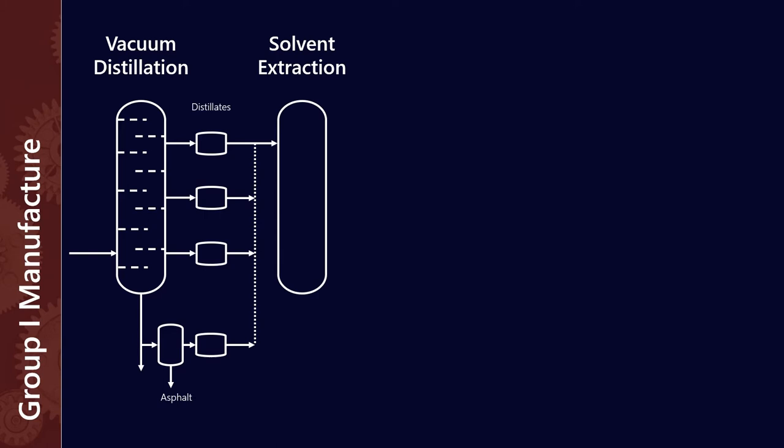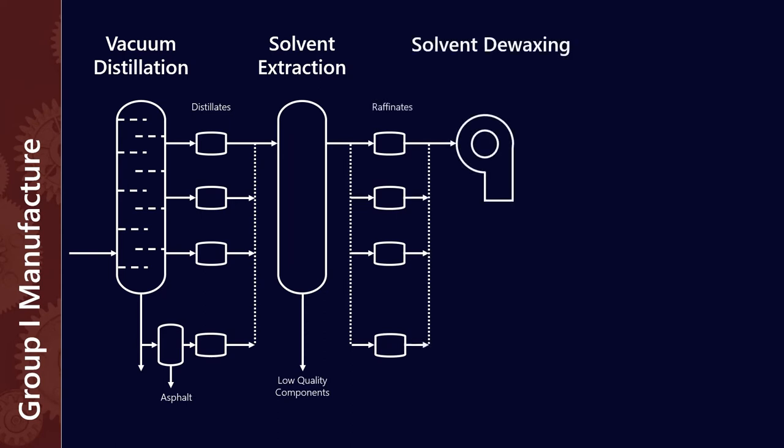So these solvents are usually really polar and they include solvents like furfural, NMP as well as phenols, and what comes out the bottom of the solvent extraction process is actually a pretty toxic chemical soup. There's not really a lot that we like about that but fortunately what we're left with is what we call raffinates that go into a solvent de-waxing process.